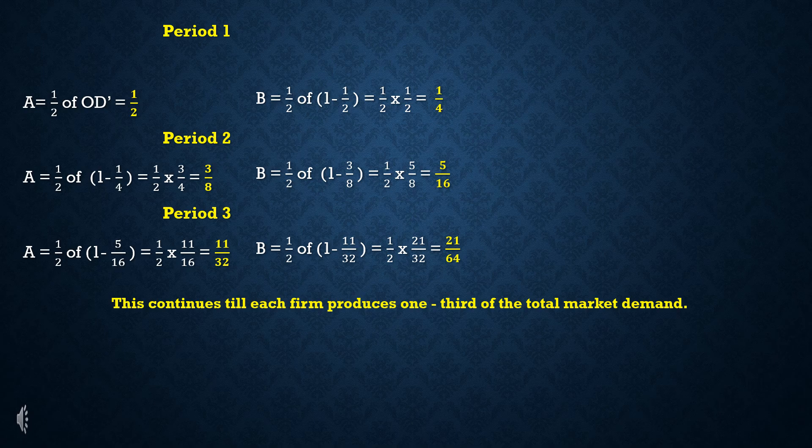In the next period, Firm A assumes Firm B will not change its output of 1/4. So Firm A produces 1/2 of (1 - 1/4), which equals 3/8. In period 2, the total output becomes 3/8 of the total market.